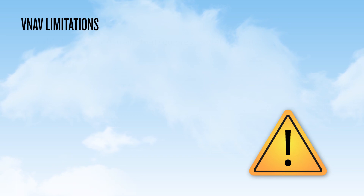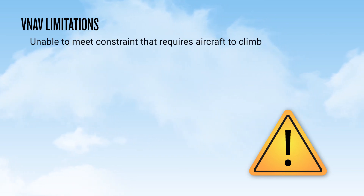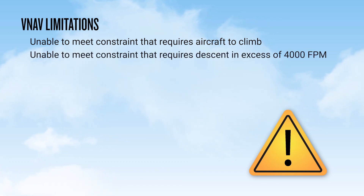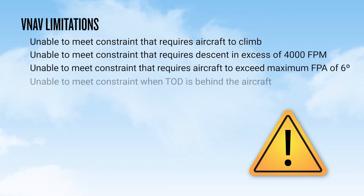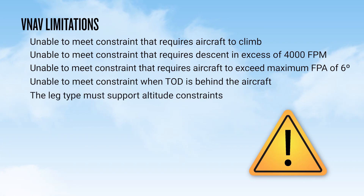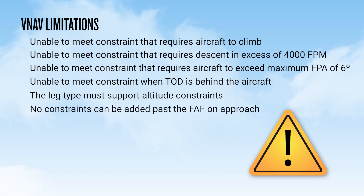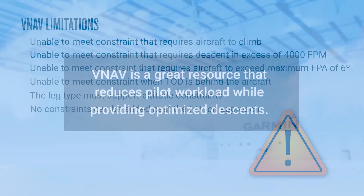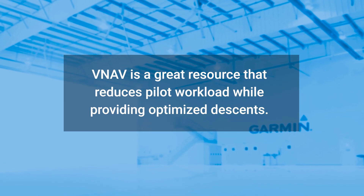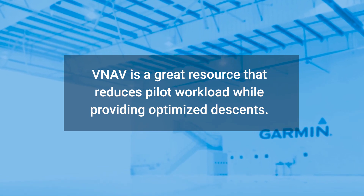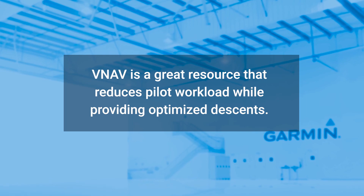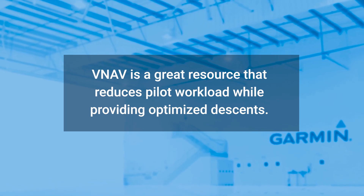Vertical navigation with the G1000 NXI has certain limitations. The system is not able to meet constraints that require the aircraft to climb. It also cannot meet constraints that require a descent in excess of 4,000 feet per minute, or a flight path angle in excess of 6 degrees. It cannot meet a constraint when the top of descent is located behind the aircraft, the leg type must support altitude constraints, and no constraints can be added past the final approach fix. Whether using VNAV functionality with an autopilot on a descent via clearance for an arrival procedure, or hand flying to arrive at pattern altitude at a designated point, the VNAV feature is a great resource that reduces pilot workload while providing optimized descent profiles.